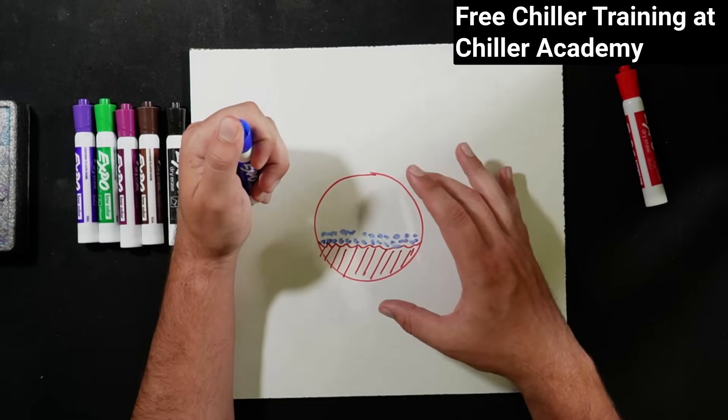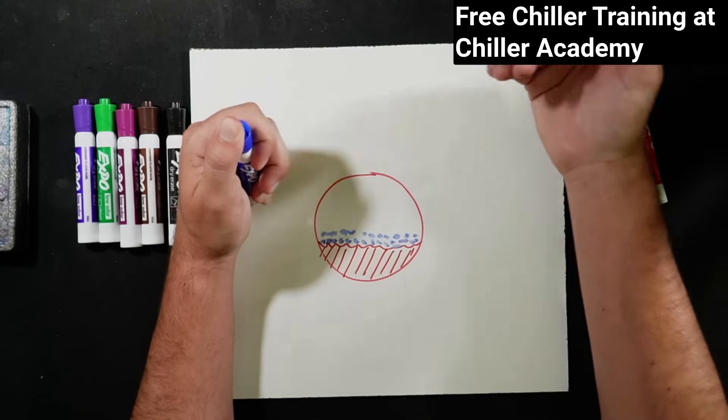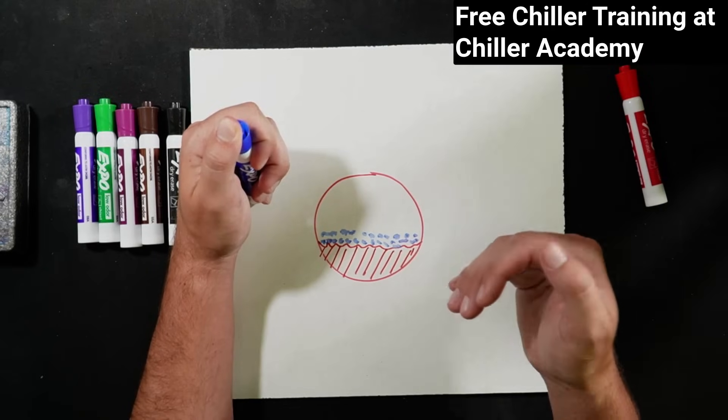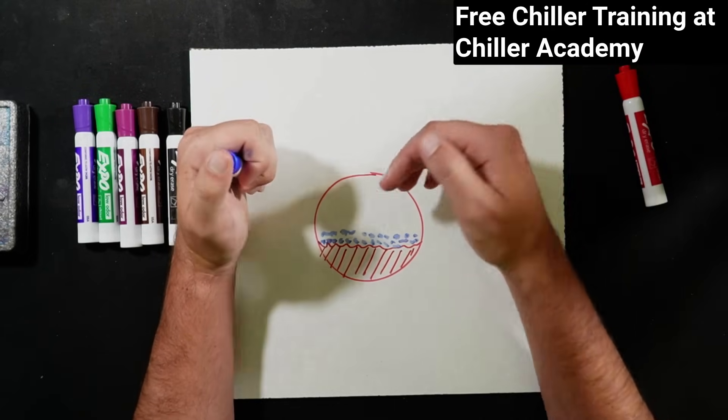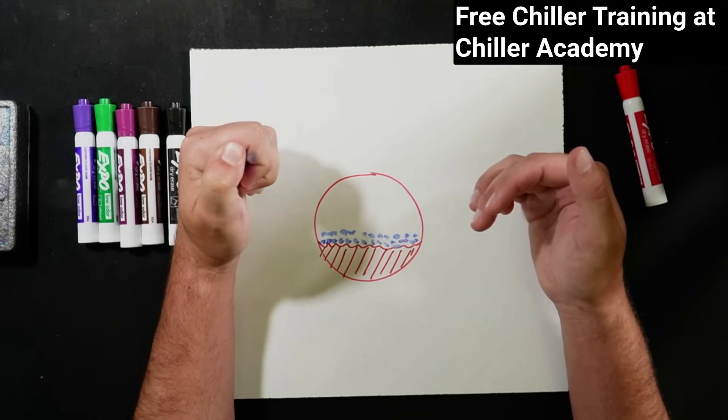We try to minimize how much oil gets into the discharge line and carried out of the compressor. But on some scale, we're not going to be able to eliminate all oil. It's going to be circulated through the system.